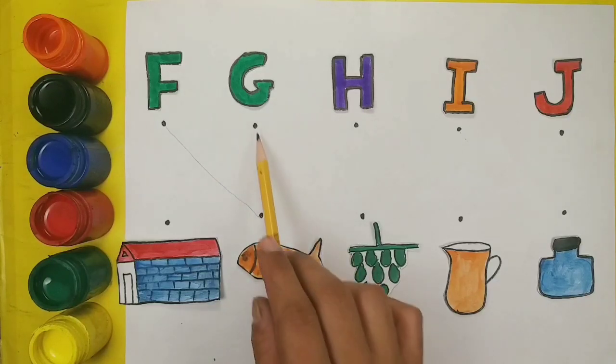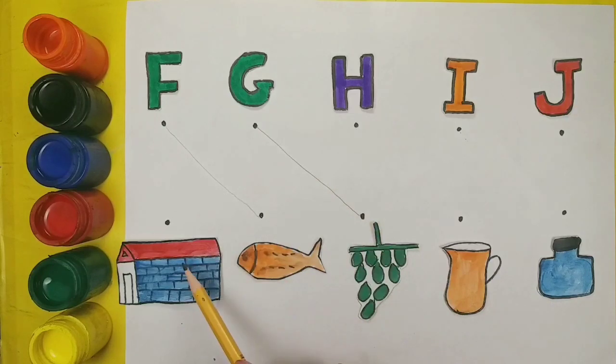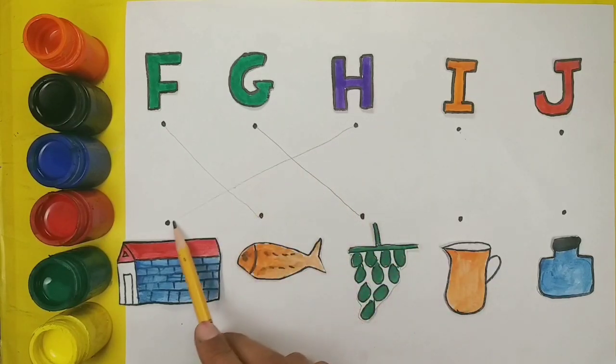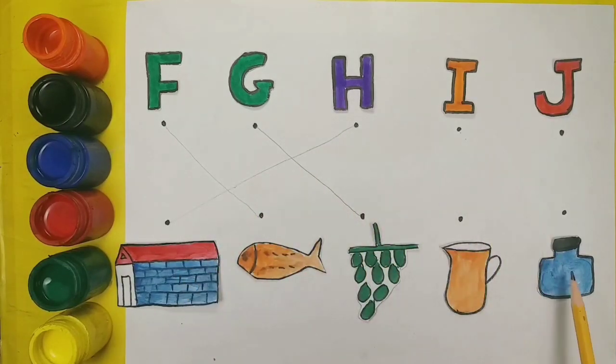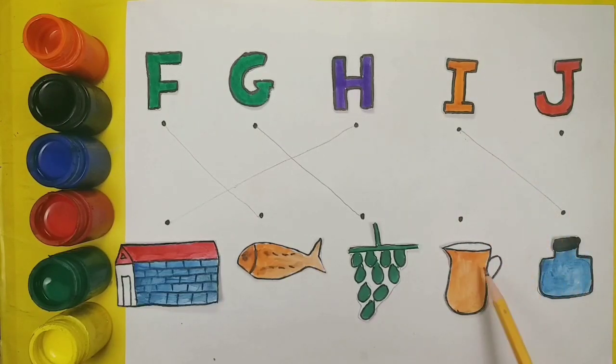G. G for grapes. H. H for house. I. I for import. J. J for jug.